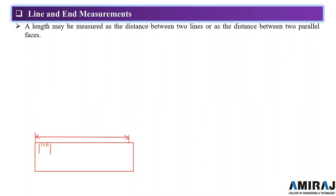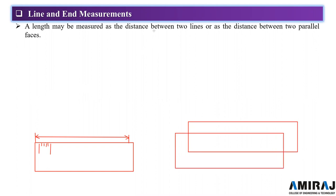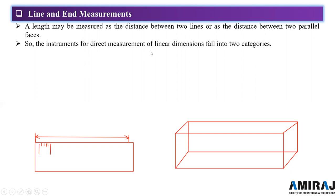Another way to measure length is the use of slip gauges. Slip gauges have standard dimensions; you place the gauge and measure the surface end-to-end distance. Instruments for direct measurement of linear dimensions fall into two categories: line standards and end standards.